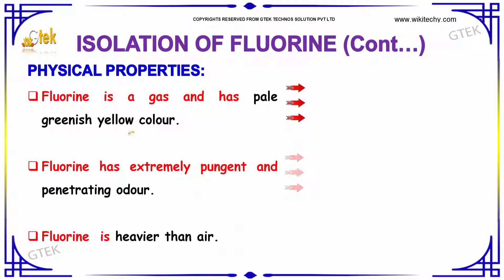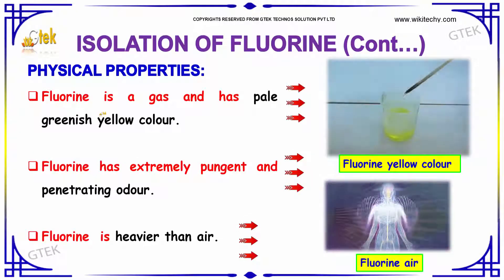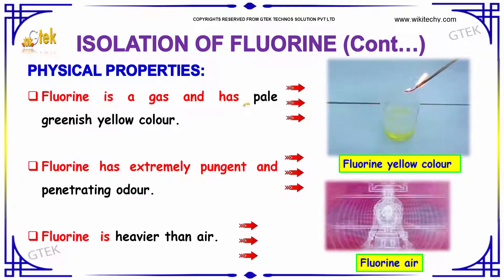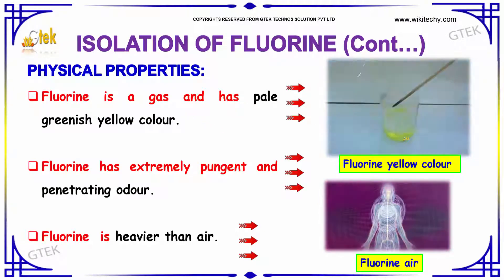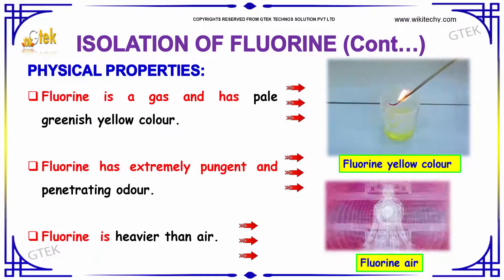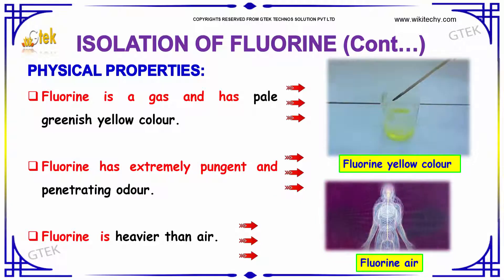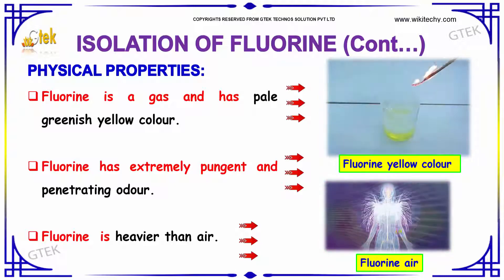The physical properties of Fluorine: Fluorine is a gas with a pale greenish-yellow color. It has an extremely pungent and penetrating odor. Fluorine is heavier than air.